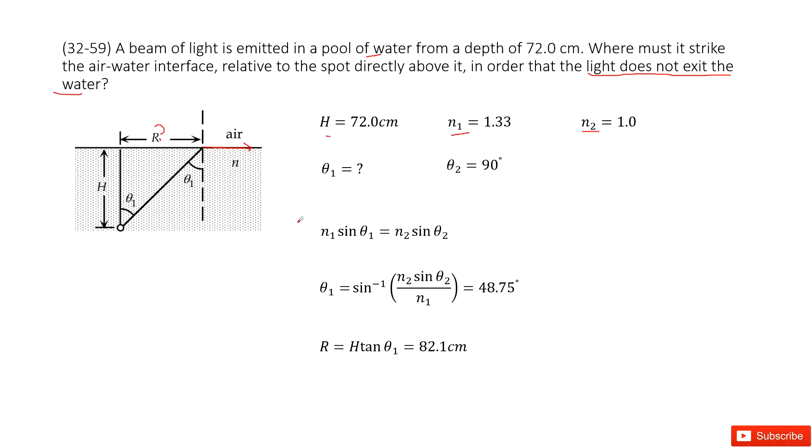So we write down Snell's equation. In this equation, theta 1 is not known, but n1 is given, theta 1 is unknown, n2 is given, theta 2 is given. So we convert this equation. We can get a function for theta 1, include all the quantities, and get the answer.